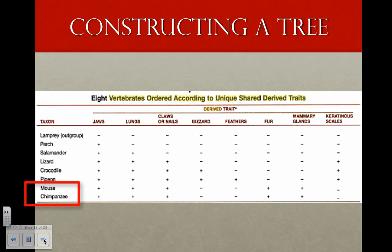The chimp and the mouse share two derived traits: hair and mammary glands. Therefore, they are absent in the out-group and the other species in the in-group. Mammary glands and fur evolved in a common ancestor of chimps and mice after that lineage separated from the ones leading to the other vertebrates. Keratinized scales are common to crocodiles, pigeons, and lizards. So we can infer that they inherited those traits from a common ancestor. The pigeon has feathers. The others don't. So we assume feathers only evolved once in the ancestor of birds.